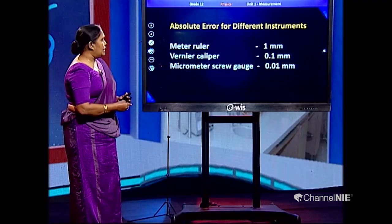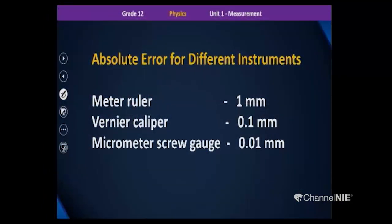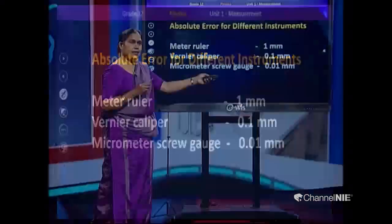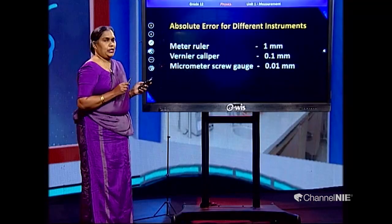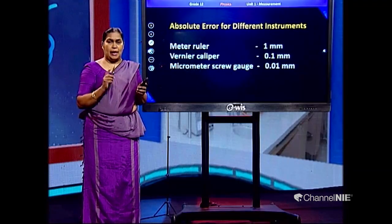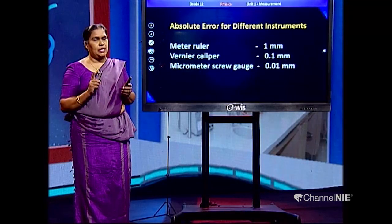We use the meter ruler, vernier caliper, and micrometer screw gauge to take length measurements in the laboratory. The absolute error of these instruments: the least count of the meter ruler is 1 millimeter, so that is the absolute error of the meter ruler. The least count of the vernier caliper is 0.1 millimeters, so that is the absolute error for the vernier caliper. For the micrometer screw gauge it is 0.01 millimeter. According to the instrument, the absolute error has a different value — keep that in mind.